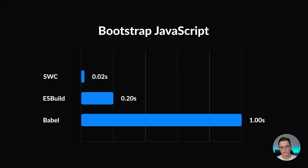The results for Bootstrap already show that SWC and ESBuild are significantly faster than Babel. Here, SWC is also faster than ESBuild, but you'll see later in the other benchmarks that these differences even out as the project size grows.